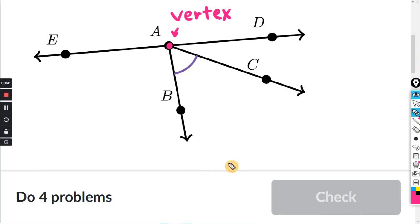So this angle here, that's the angle symbol. We can call it B, A, C. Or we can go the other way, C, A, B.